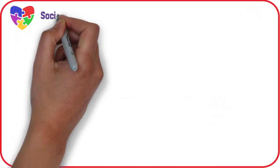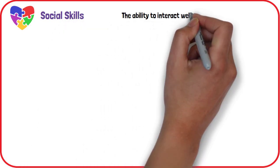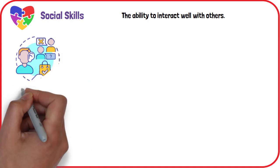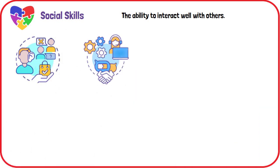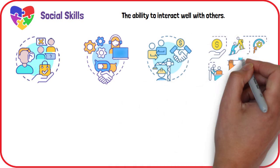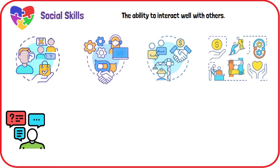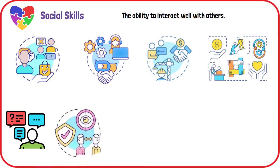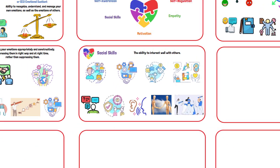Social Skills: Effective emotional intelligence also requires the ability to interact well with others. This includes active listening, clear verbal and non-verbal communication, and building strong relationships. In the workplace, good social skills help in forming productive connections with colleagues and leaders. To enhance social skills: ask open-ended questions, practice good eye contact and active listening, show genuine interest in others, and use icebreakers to start conversations.